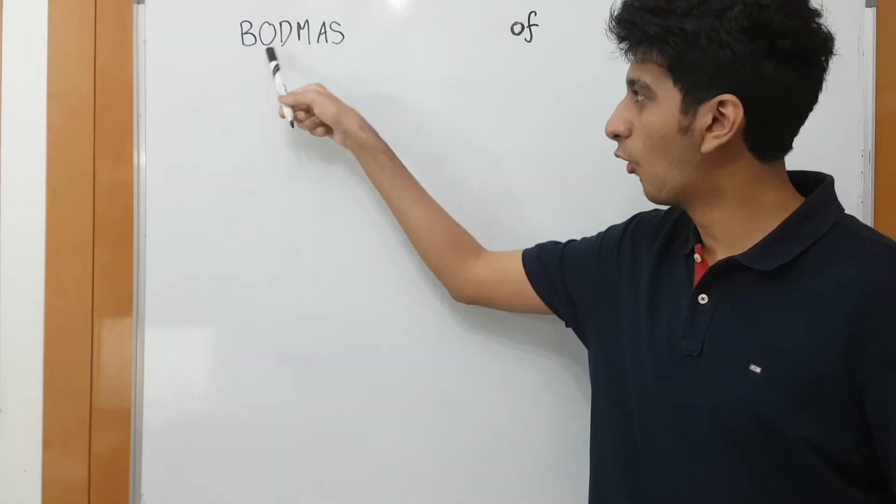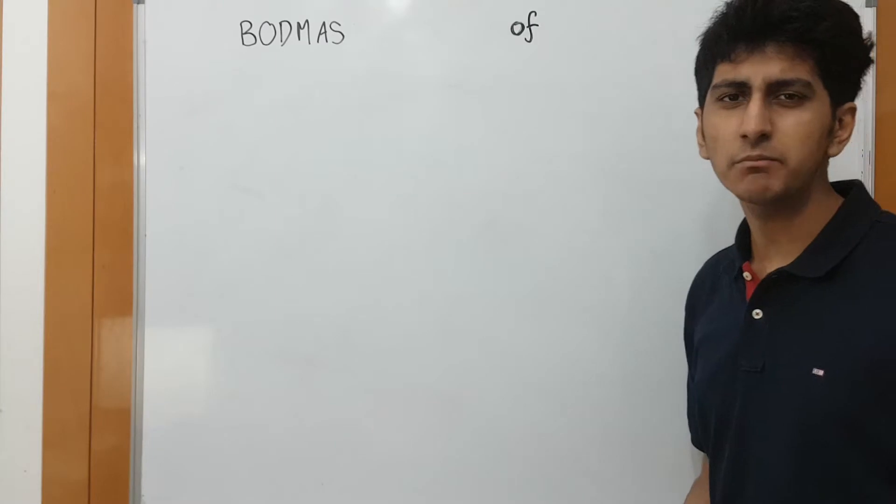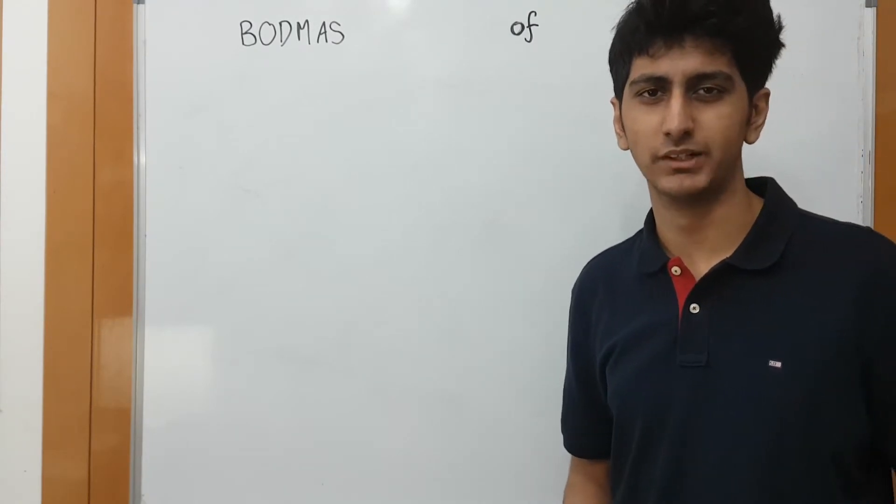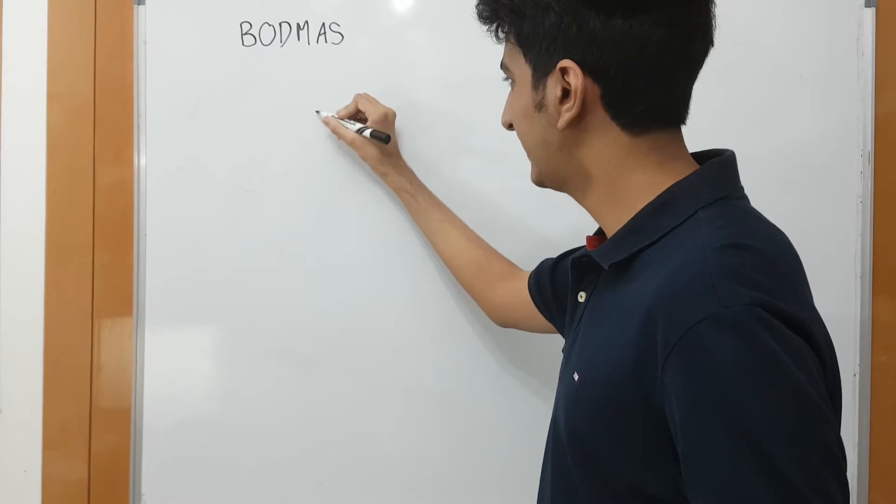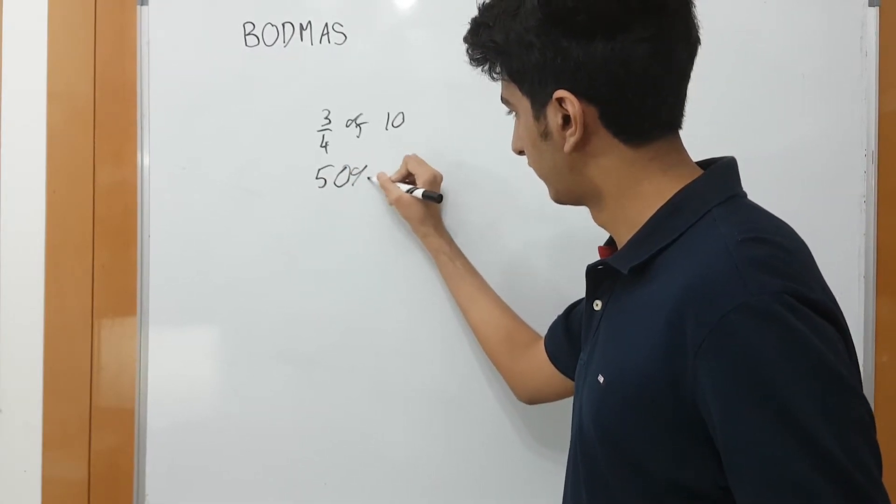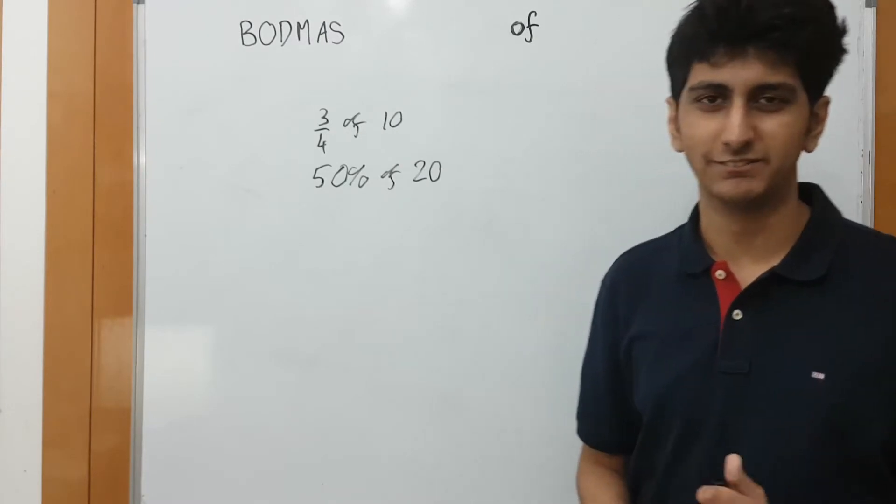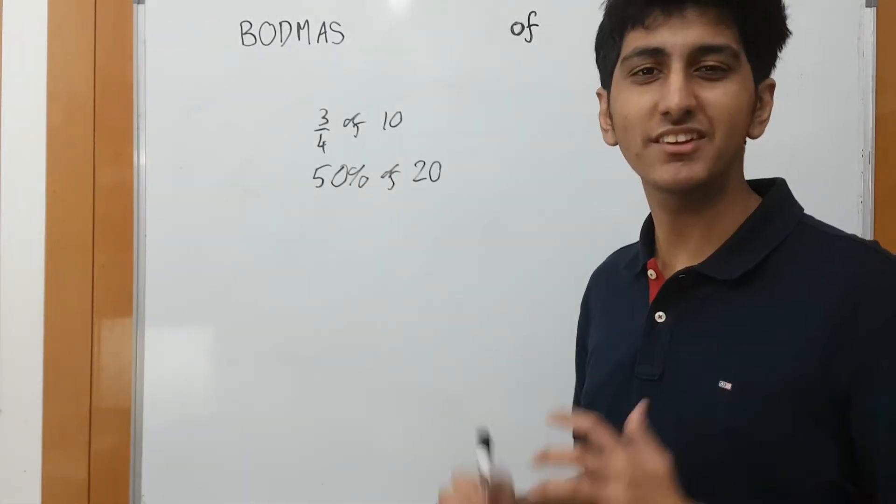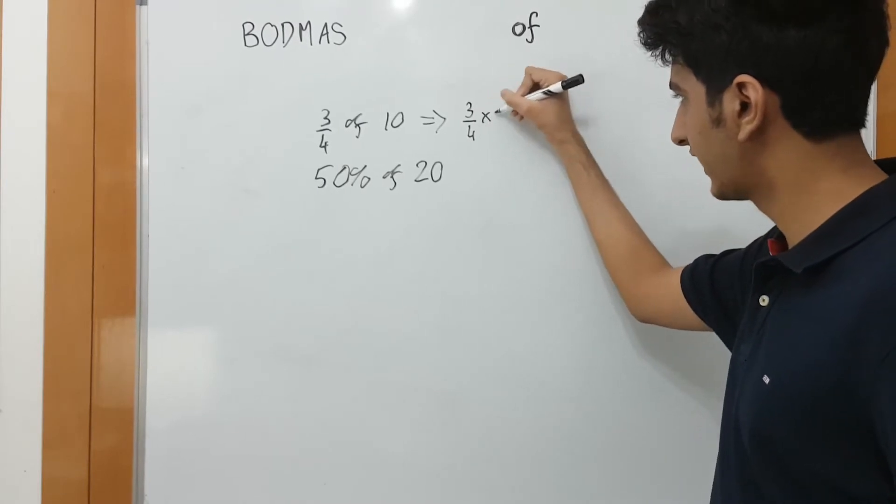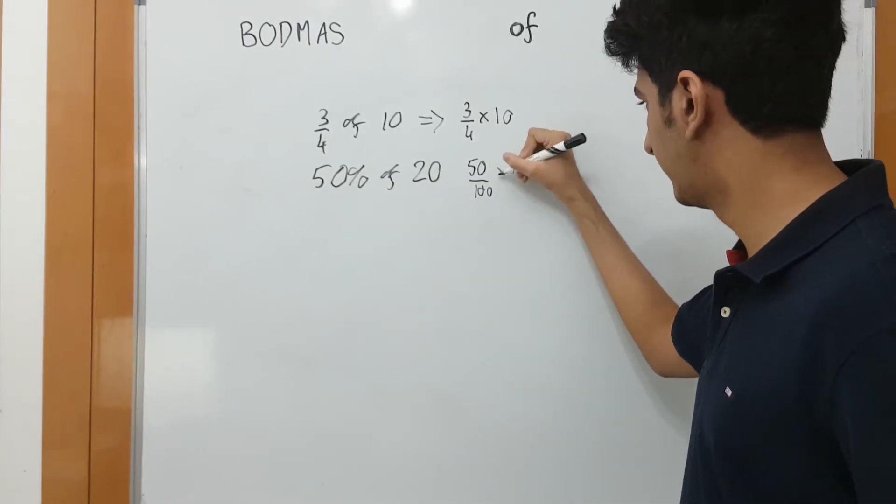So now we will see what is O. What is O? This O is of. In BODMAS, it is of. If you have seen fractions or percentages, then you will see it in any question. If it happens to find 3 by 4 of 10, or 50% of 20. In all questions, you have seen of. It is very common. This of is simply not a multiplication. This will evaluate to 3 by 4 into 10 and 50 by 100. This is a percentage. 50% means 50 by 100 into 20.